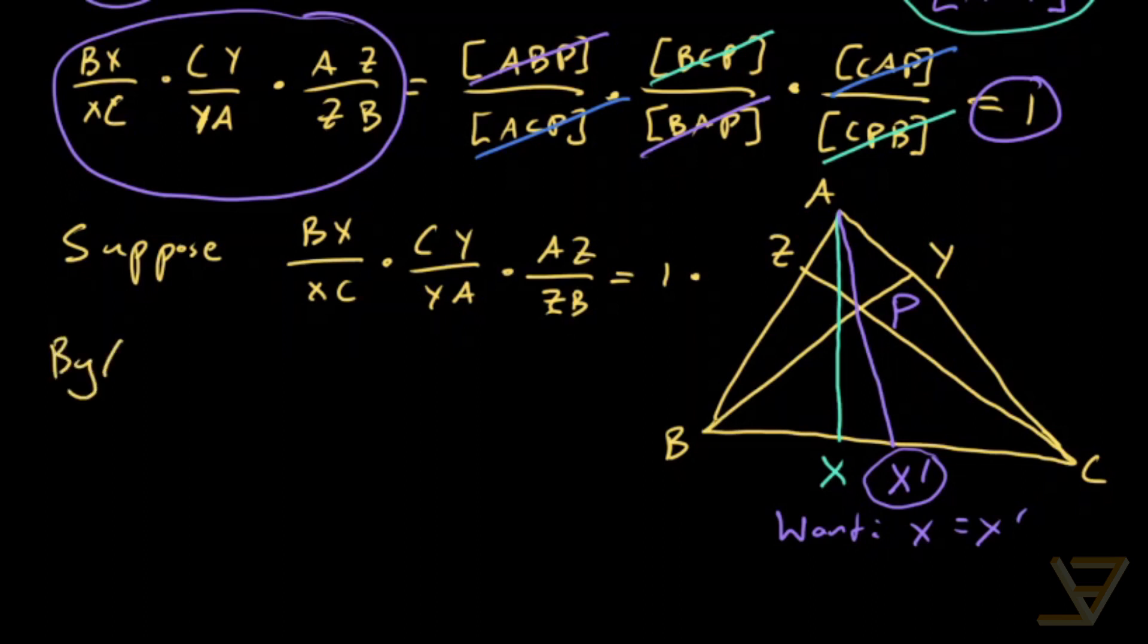So let's show that X equals X prime. By Ceva, and this is one of those cases where one direction of a theorem proves its own converse, so by Ceva since AX prime does go through the concurrency point, we get that BX prime over X prime C times CY over YA times AZ over ZB equals 1.